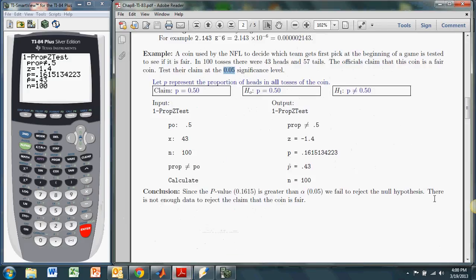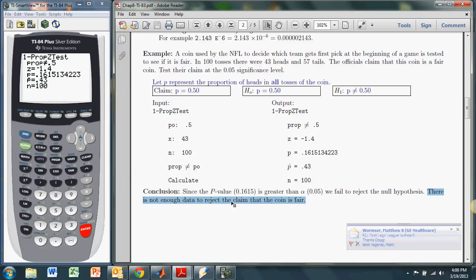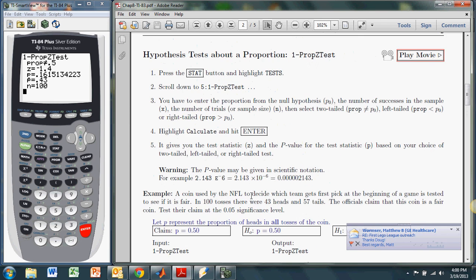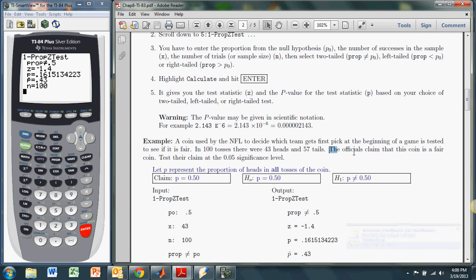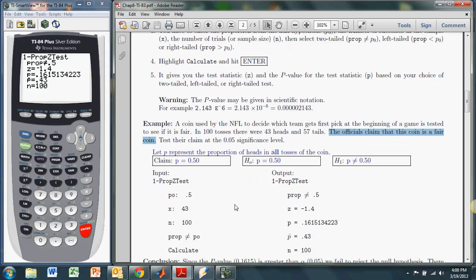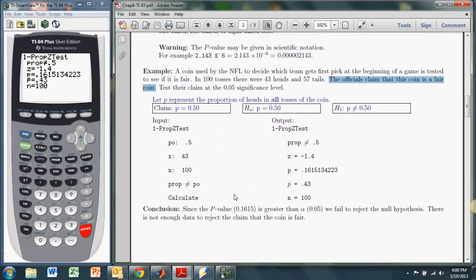Since we failed to reject, there is not enough data to reject the claim that the coin is fair. The officials claim that the coin is a fair coin, and based on this test, we certainly can't reject that. We get almost everything we need. It would be nice if they gave us a critical value, but they don't. They give you the p-value, which is certainly sufficient for knowing whether or not to reject the null hypothesis. Pretty easy stuff.